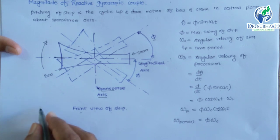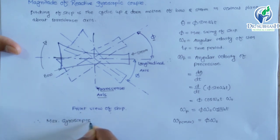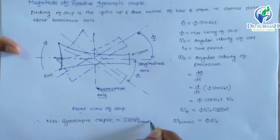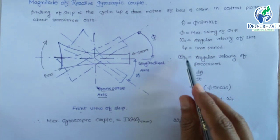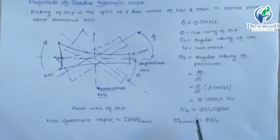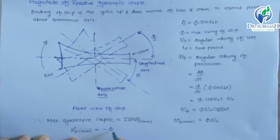Maximum gyroscopic couple is equal to I into omega into omega_p_max. This is the equation of maximum gyroscopic couple. Similarly, we can derive the equation for angular acceleration of precession. We again write d(omega_p)/dt, then we get minus phi into omega_0 squared into sin(omega t). So the maximum angular acceleration of precession is equal to phi into omega_0 squared.